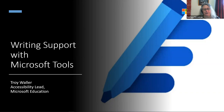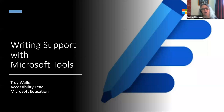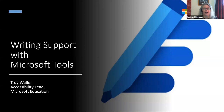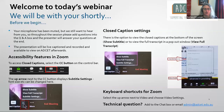It was pretty amazing what that technology can now do. Today Troy is going to be delivering a session focusing on writing support in Microsoft tools. Troy is the learning development specialist for Microsoft and has many years' experience in this area. To activate the closed captions, you can click on the CC button in the toolbar, which is located either at the top or the bottom of your screen.